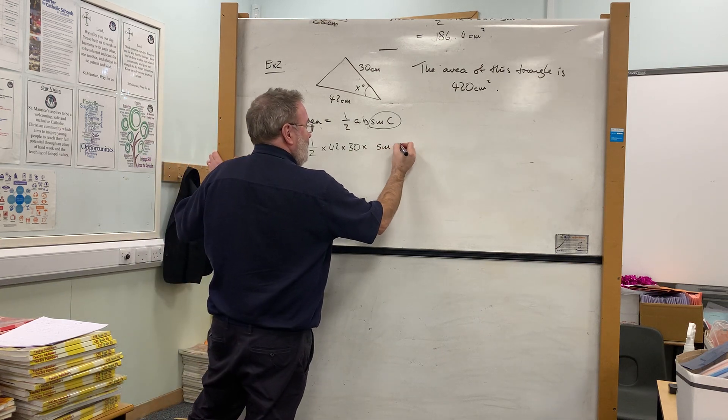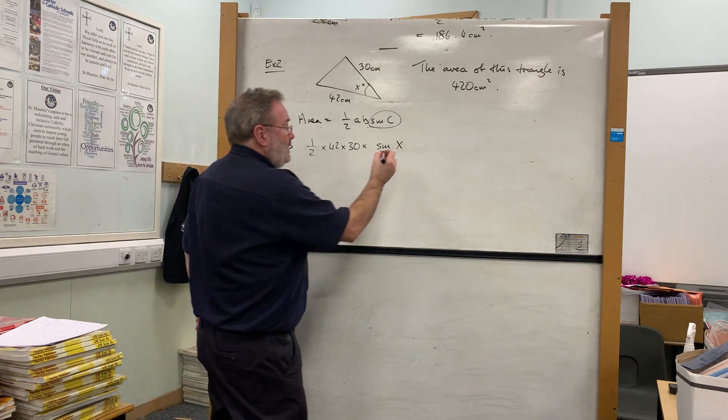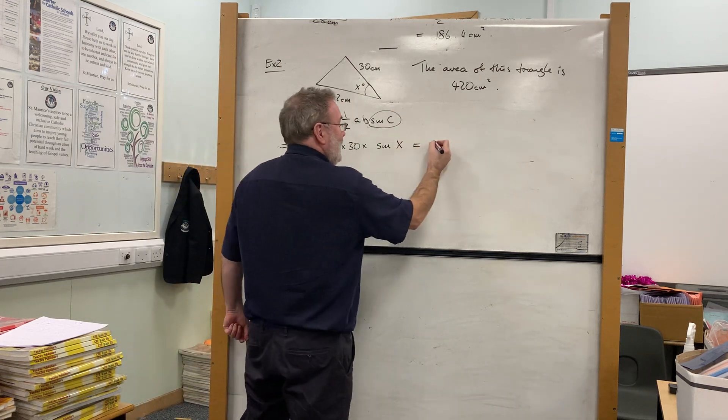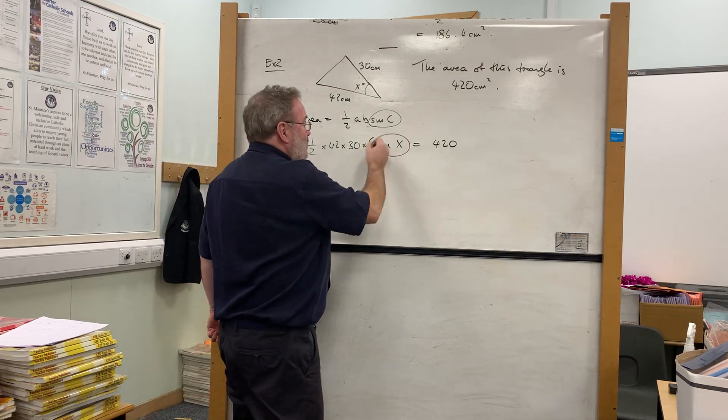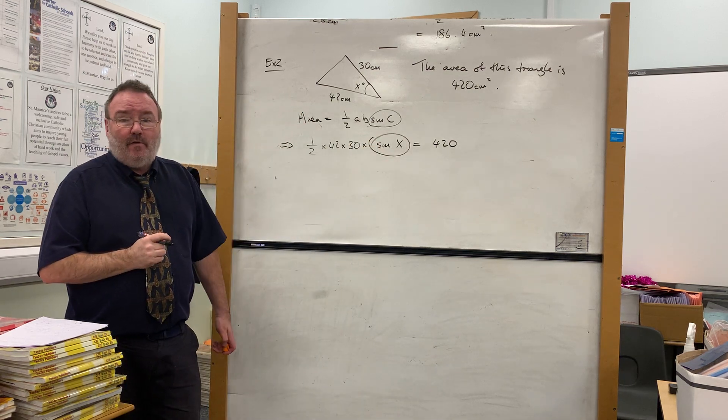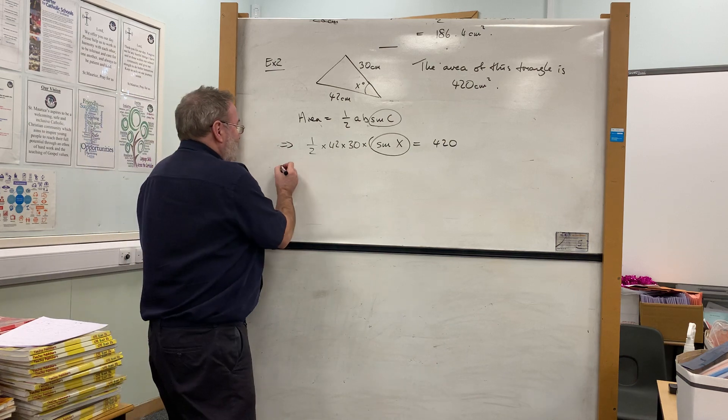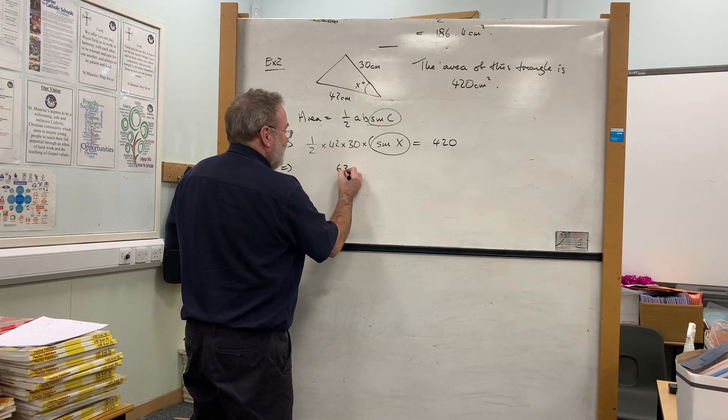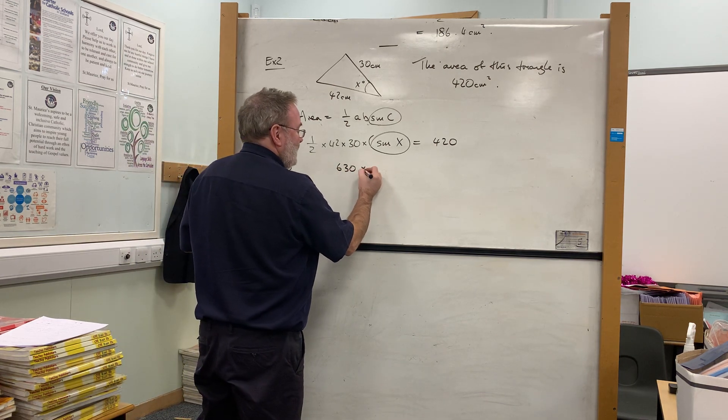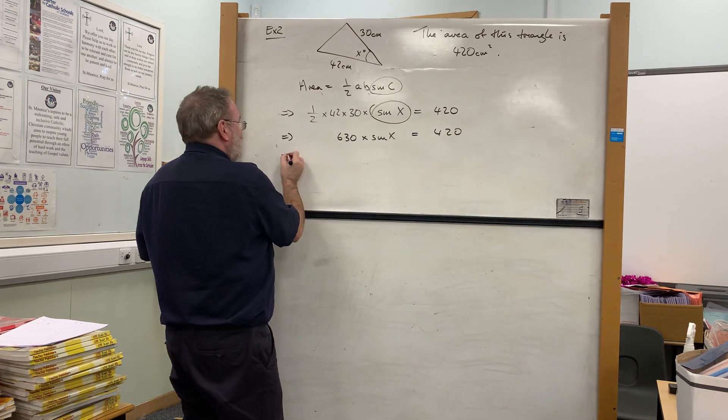But we do know the area, so therefore we have an equation and we have an equation where we're going to solve it for sine x and then for x. So we do this calculation: a half times 42 times 30 is 630 times sine x equals 420.